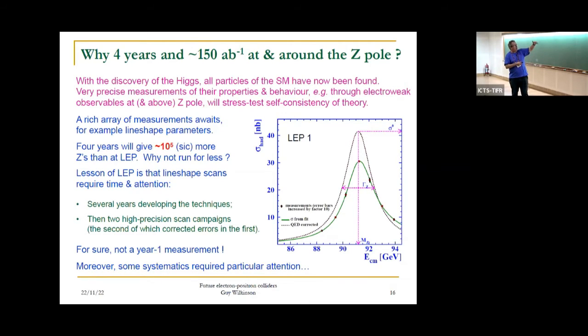Do you really need four years of operation? The lesson from LEP is yes, you do. Making line shape scans is a really delicate business. It's not a year one measurement. We need to devote time to this. Certain systematics require particular attention.